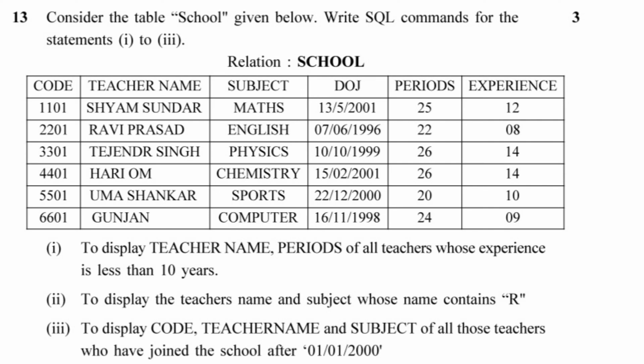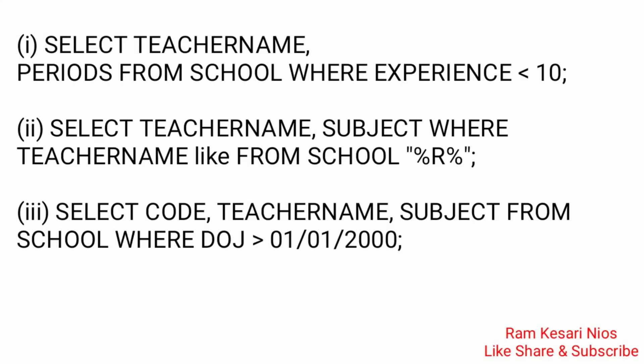Question 13: Consider the table School. Write SQL commands for the following: 1. Display teacher name and periods of all teachers whose experience is less than 10 years: SELECT teacher_name, periods FROM school WHERE experience < 10; 2. Display teacher name and subject whose name contains 'r': SELECT teacher_name, subject FROM school WHERE teacher_name LIKE '%r%'; 3. Display code, teacher name, and subject of all teachers who joined the school after 1-1-2000: SELECT code, teacher_name, subject FROM school WHERE date_of_joining > '1-1-2000'.